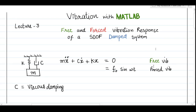Welcome again to the third lecture of our series 'Vibration with MATLAB'. In this lecture we will study the free and forced vibration response of a single degree of freedom damped system. Here is the mathematical model of the damped system showing the spring, viscous damping, and mass. The equation of motion is mx double dot plus cx dot plus kx equals zero for free vibration, or a harmonic force for forced vibration.